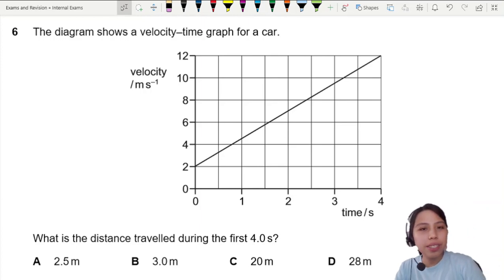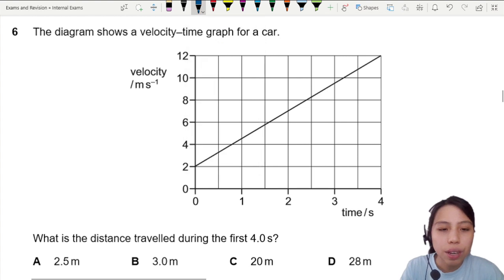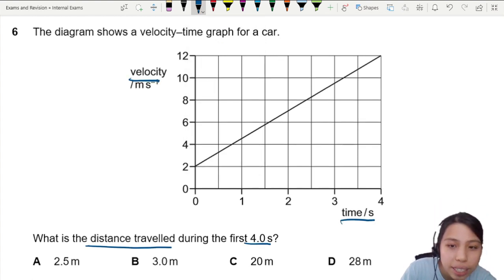The diagram shows a velocity-time graph for a car. What is the distance traveled during the first four seconds? If you have a velocity-time graph, the fastest way is to find the area under the graph, which is the distance traveled.